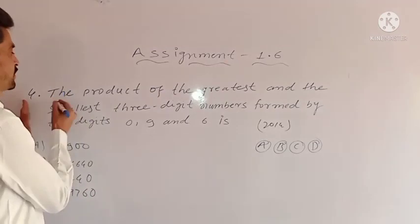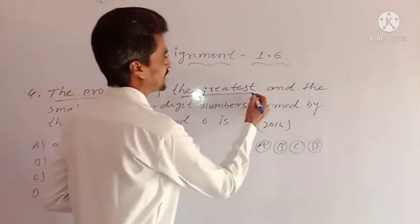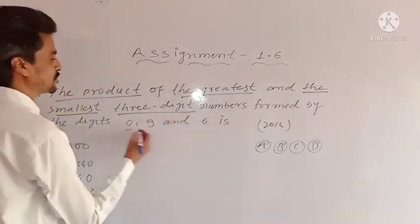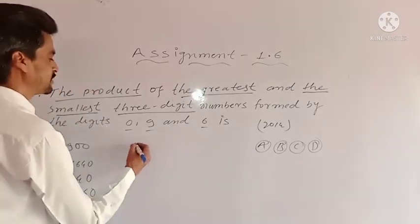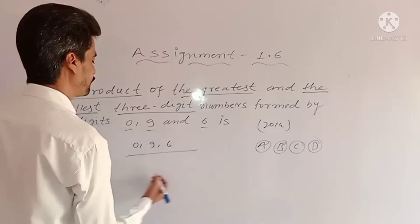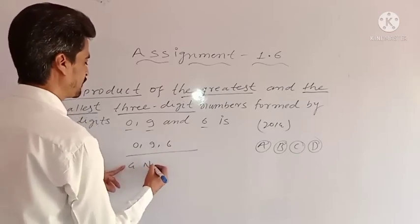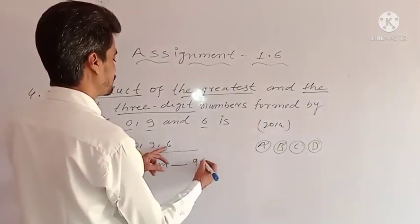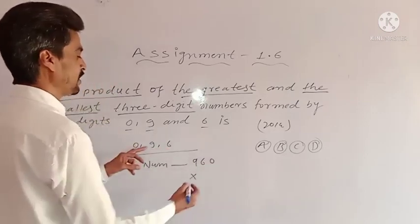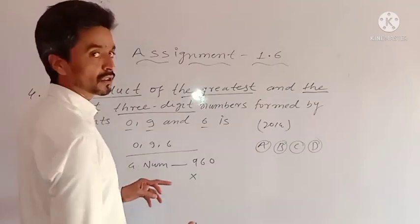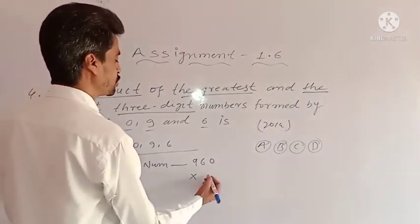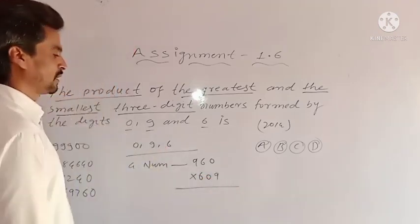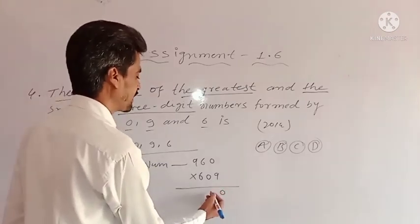Problem 4: The product of the greatest and the smallest 3-digit numbers formed by the digits 0, 9, and 6. We have digits 0, 9, and 6. For the greatest number we go in descending order: 9, 6, 0 — that is 960. Product means multiplication. For the smallest number we go in ascending order, with 0 on the second place: 6, 0, 9 — that is 609.